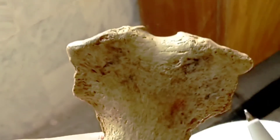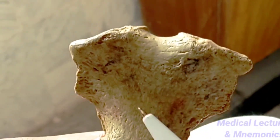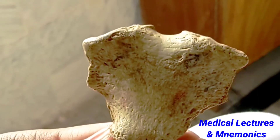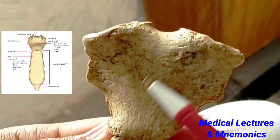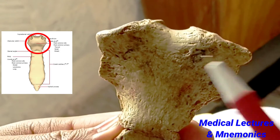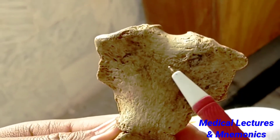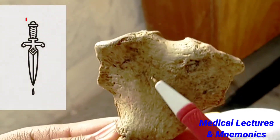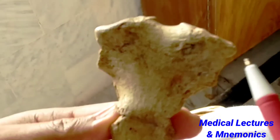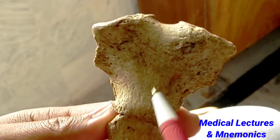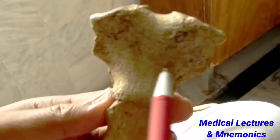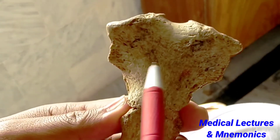Good afternoon. Today I am going to talk about the manubrium. I have already talked about in the previous video that the manubrium is a part of the sternum, and it represents the handle of the sword. So the manubrium — you can see this bone — has two surfaces.